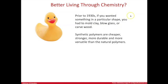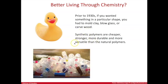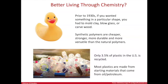Before the 1930s, if you wanted an item in a particular shape like this rubber duck, you had to mold it out of clay, blow it out of glass, carve it out of wood, or make something out of fabric and stuff it. Synthetic polymers and plastics have allowed for cheaper, stronger, more durable, and more versatile products — you can have any shape you want. That's led to what we have now: plastic water bottles, plastic anything, in any shape you want, and pretty cheap.